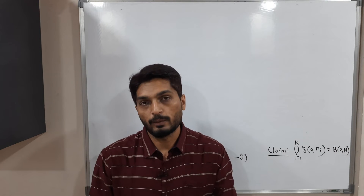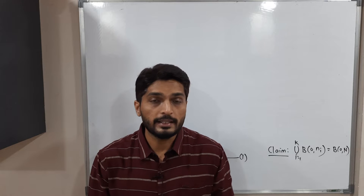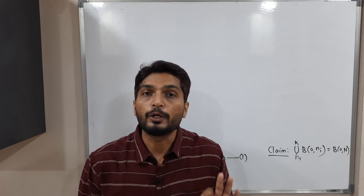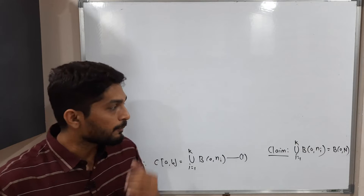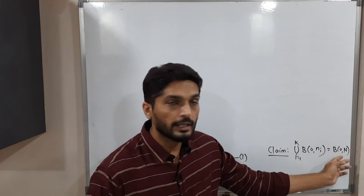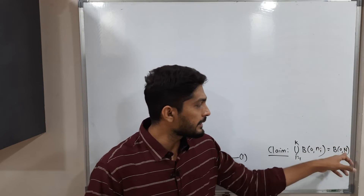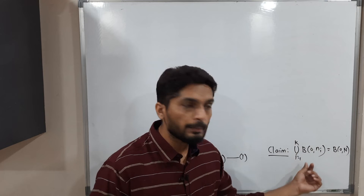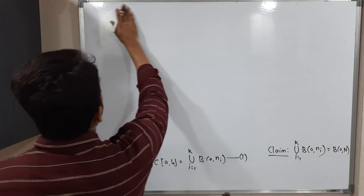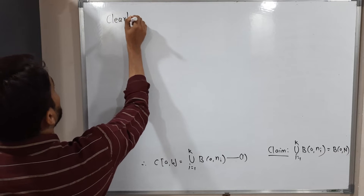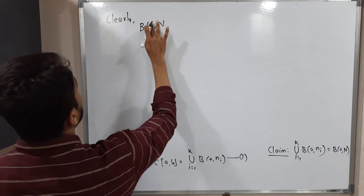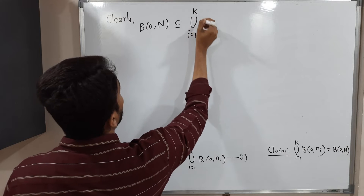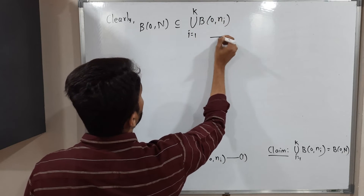To prove two sets are equal, we first prove one is a subset of the second, then the second is a subset of the first. Clearly, B(0, N) is a subset of the union of B(0, Nᵢ), since capital N is one of the Nᵢ values, so that ball is already present in the union. Let us call this statement 2.